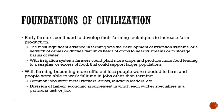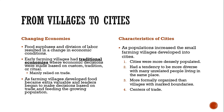With a larger population, not as many people were needed to farm anymore, so people were able to have different jobs. They began specializing in other jobs, like metal workers, artists, and religious leaders. This division of labor became known as an economic arrangement in which each worker specialized in a particular task or job.